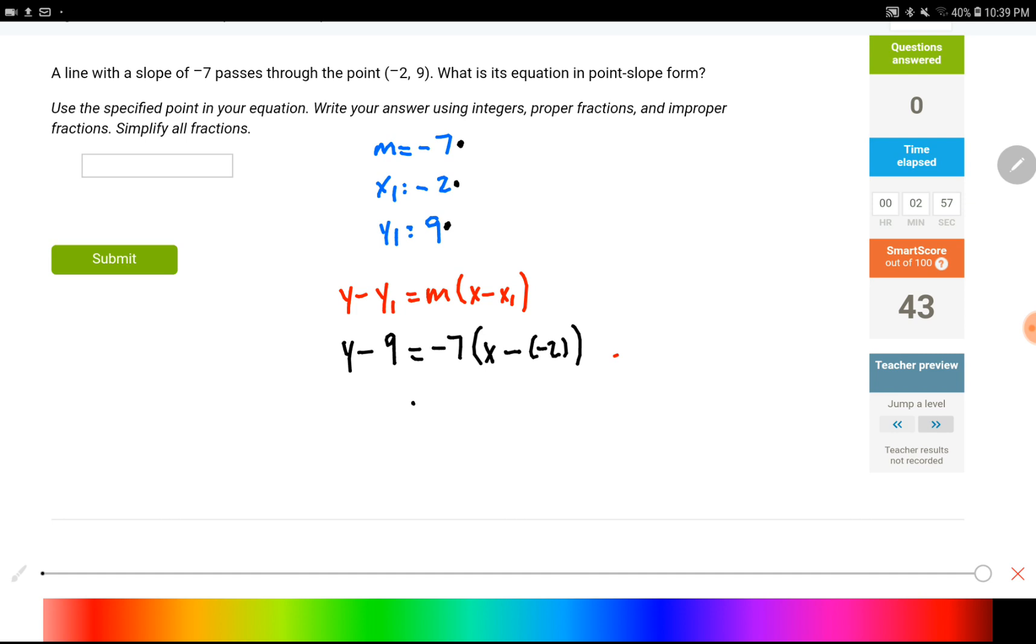So we need to simplify this a little, x minus negative 2 becomes x plus 2, left side stays the same.